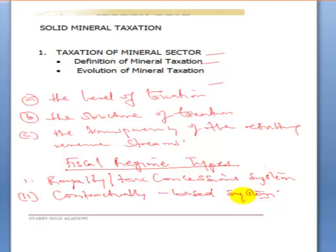Project-specific arrangements can provide governments with flexibility but can also weaken institutional checks and balances. In a contractually-based system, agreements are confidential in some countries, which can prevent companies and governments from engaging in transparency initiatives. There is also a question of whether the use of negotiated agreements, in the absence of a more fully developed legal system, might undermine the development of such a system. These are the fiscal regime types, each with its advantages and disadvantages.